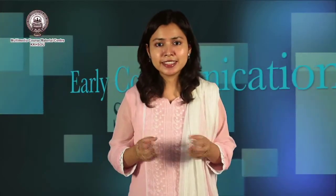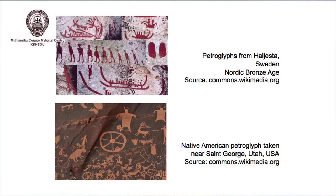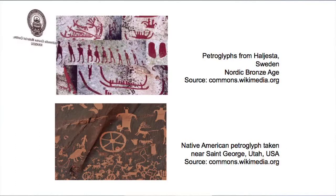Here we come across a very interesting term: petroglyphs. These are illustrations or images made by early human beings, especially Neolithic age people, which came after cave painting. Petroglyphs are images made by carving on rock or stones, and they actually date back to around 10,000 BC. On the screen, you can see two examples of petroglyphs — the first has been excavated from Sweden and dates back to the Nordic Bronze Age, and the other is a Native American petroglyph found in Utah, USA.